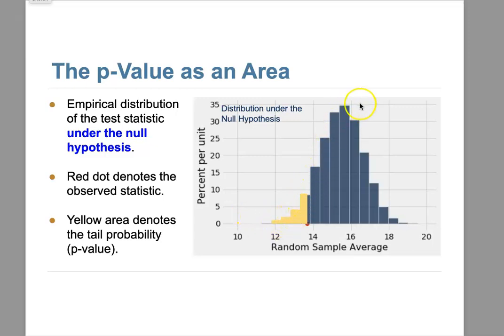Here is our distribution under the null hypothesis. We have our observed data here, and it's not very clear from the diagram whether we should favor or reject the null hypothesis. That's why we introduce the p-value. The p-value is the area on the tail — we can calculate it from the empirical distribution as a percentage.